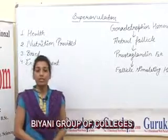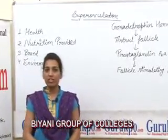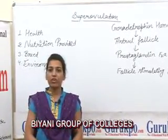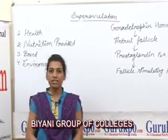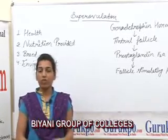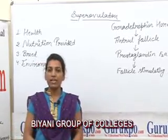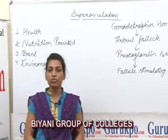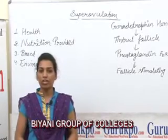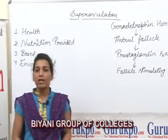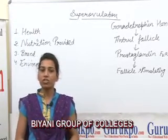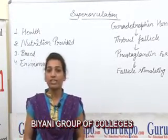The reproductive cycle of a ruminant female is such that an ovarian follicle releases a single egg at a time. Ovulation occurs as a result of the circulation of gonadotropin hormone, and by increasing the concentration of this hormone,